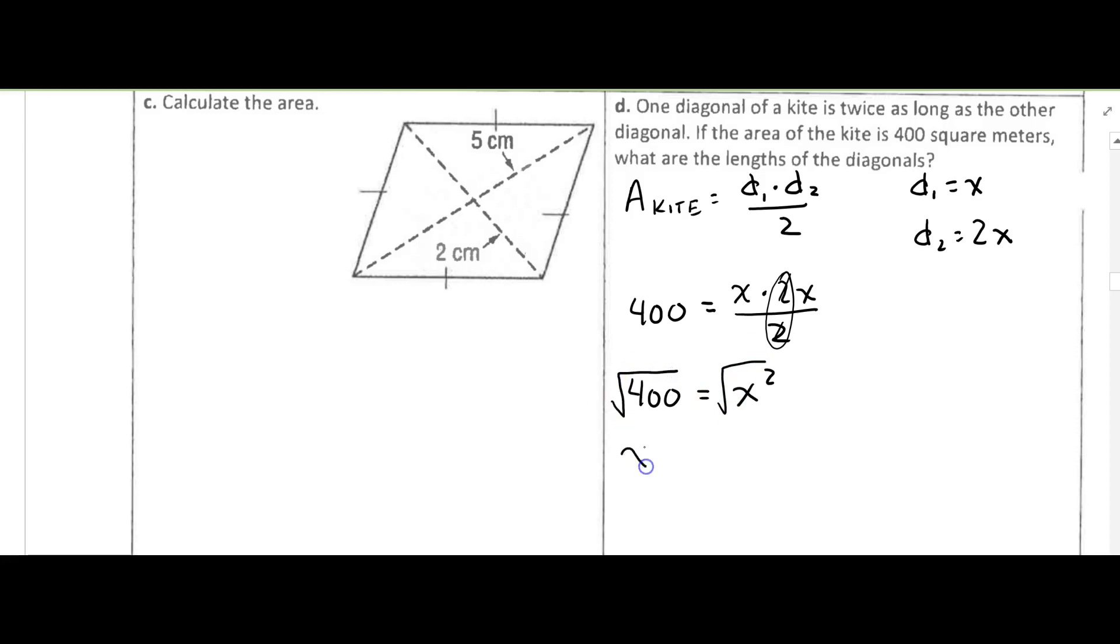And then I'll take the square root of both sides, and we end up with X is equal to 20. So what that means is that diagonal 1 is going to be 20 meters, and diagonal 2 is going to be twice as long, so it's going to be 40 meters.